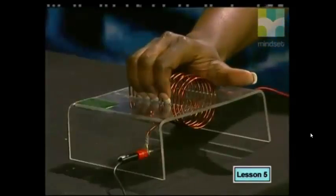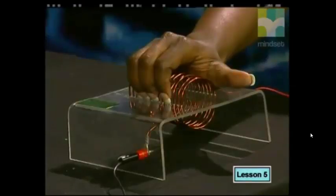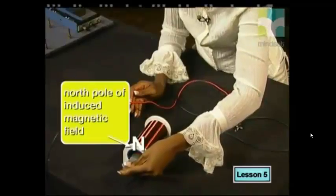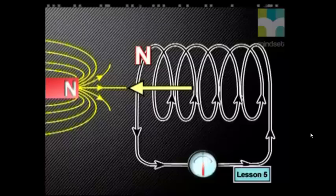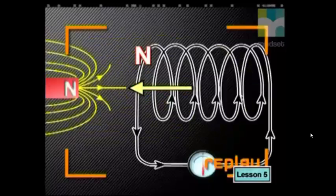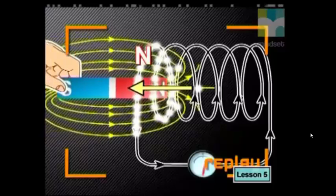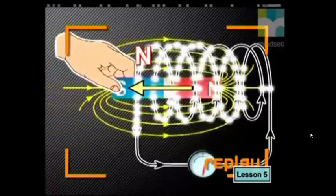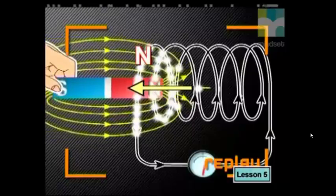Remember, for an electromagnet, when the direction of the current is anti-clockwise (positive), the direction of the magnetic field is also positive, pointing out of the coil. This means that this end, where the magnet entered the coil, must be the north pole of the induced magnetic field. So the induced magnetic field opposes the magnetic field of the moving magnet. The magnetic field of the moving magnet is repelled by the north pole of the solenoid. In other words, as the north pole of the magnet moves towards the coil, it induces a magnetic field in the coil. This induced magnetic field works to reduce or oppose the inducing action of the magnet by exerting a force on the magnet that is opposite to the direction of the magnet's motion.